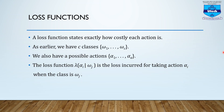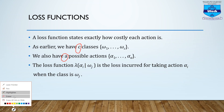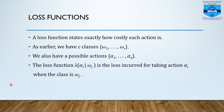The next topic is the loss function. A loss function states exactly how costly each action is. As earlier, we have C classes — W1 up to W_C — and we also have A possible actions: alpha_1 up to alpha_A. The loss function lambda of alpha_i given W_j is the loss incurred for taking action alpha_i when the true class is W_j. That is the calculation of the loss function.